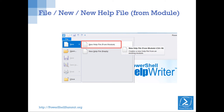It knows that for inputs and outputs — it grabs the output type. For inputs, it knows which parameters pass value through the pipeline. It knows help. And this is just a 1.0 — it will get better and better.